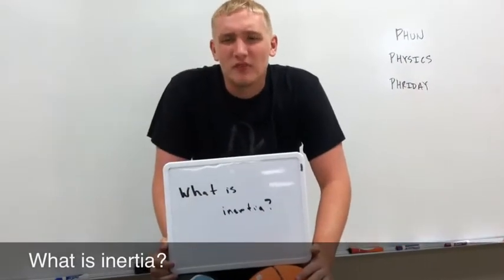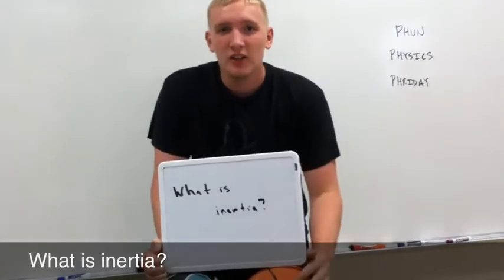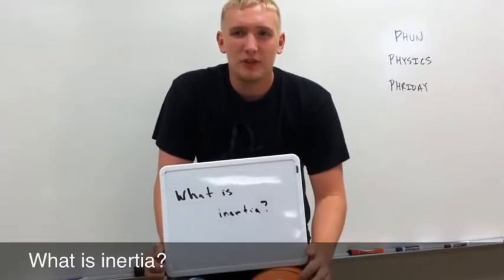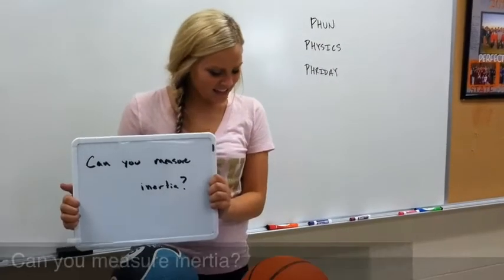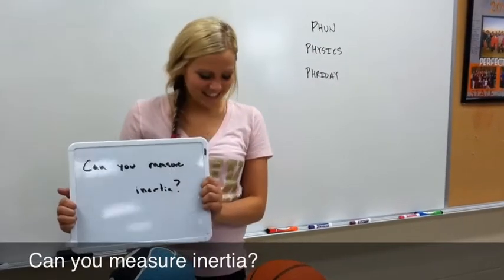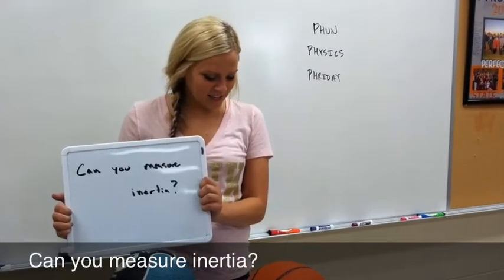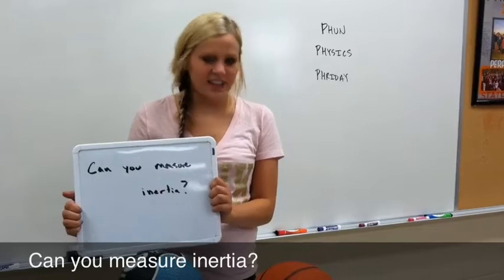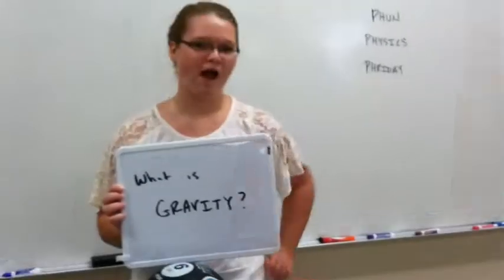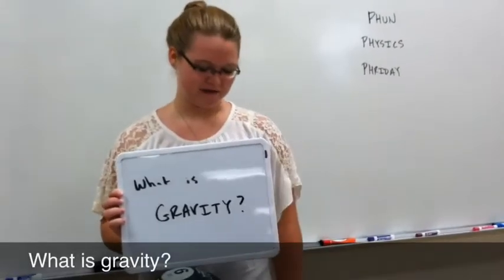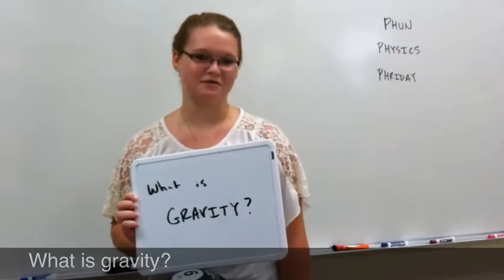What's inertia? Inertia is the desire for an object to keep doing what it's doing, like moving or staying still. Can you measure inertia? Inertia is measured by the weight of an object divided by the acceleration at which it falls. What is gravity? Gravity is an attractive force between every pair of objects in the universe.